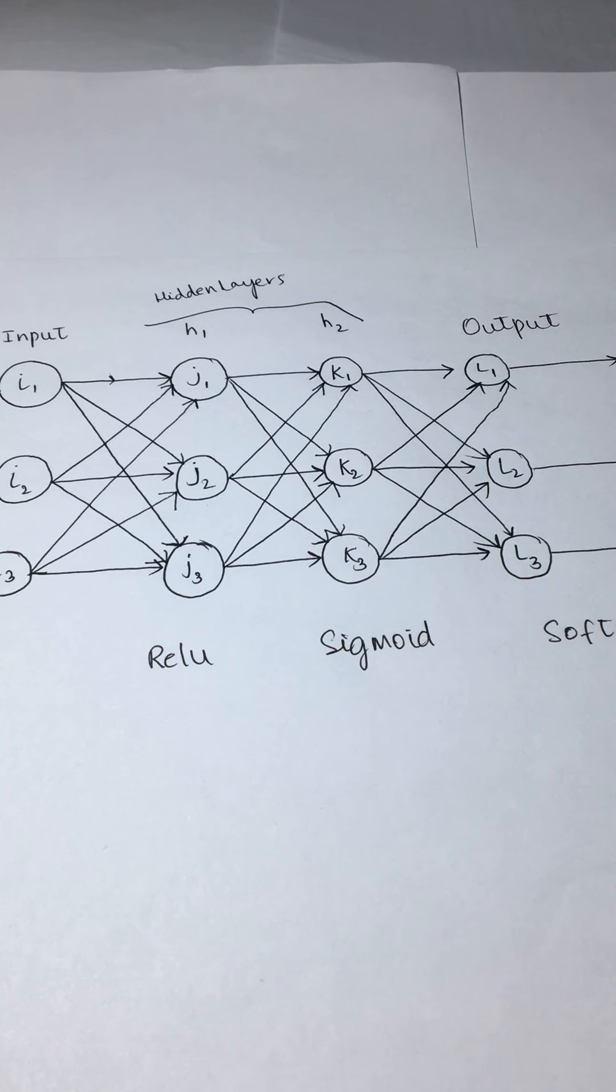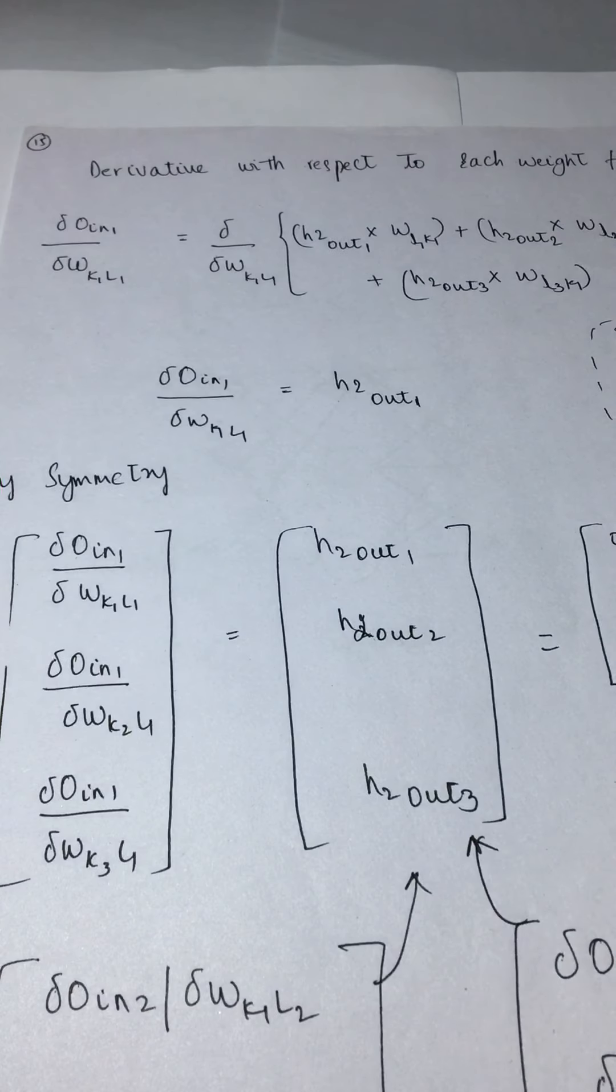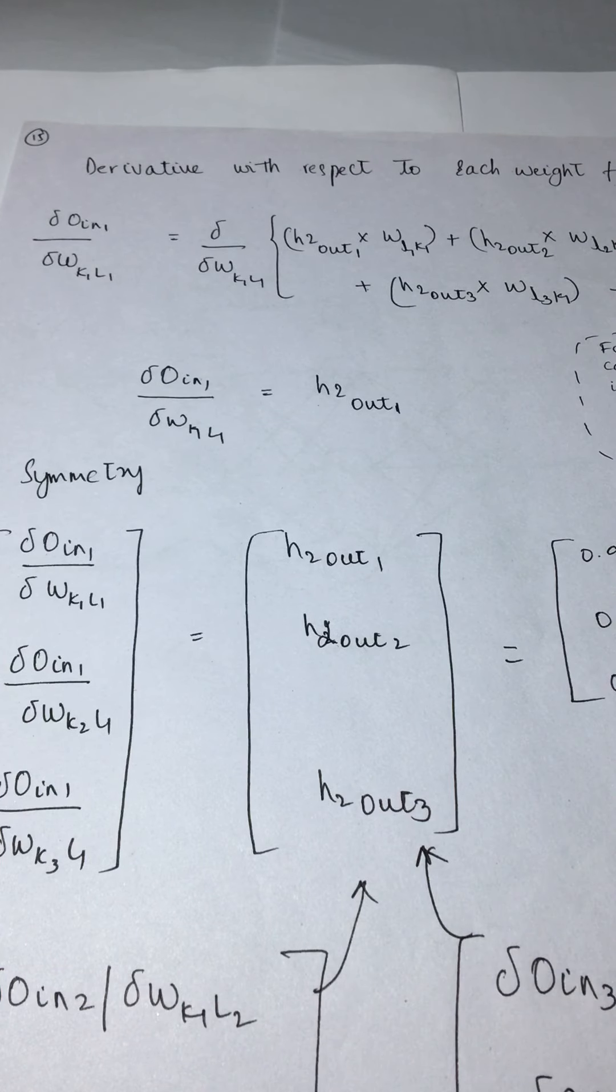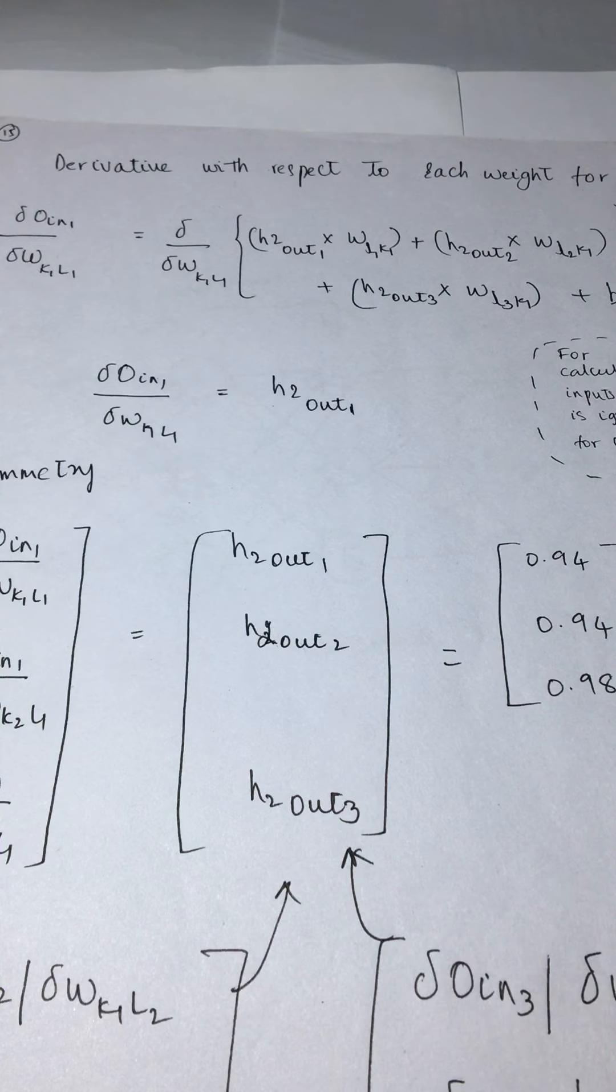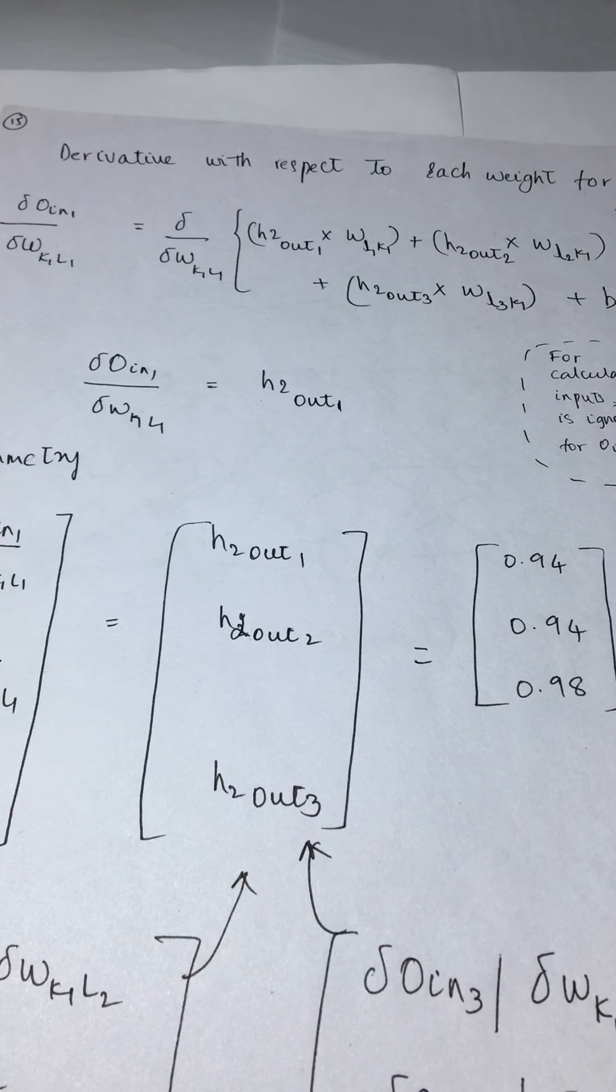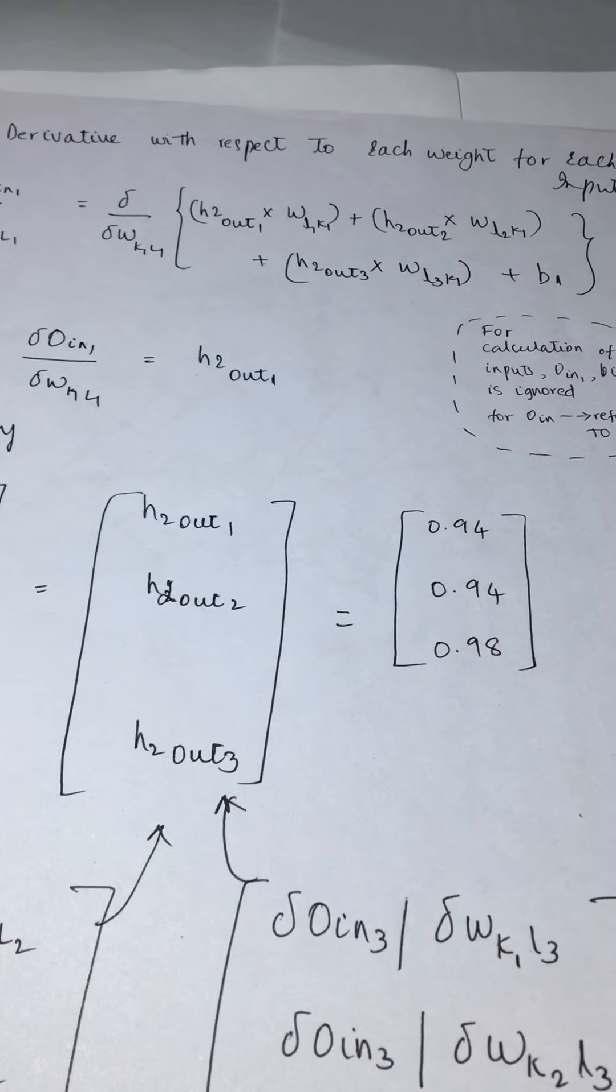Next we need to calculate the derivative with respect to each weight for each input. We're calculating the derivative of your input with respect to your weights. The inputs for this particular node or neuron are H2 output 1, H2 output 2, and H2 output 3.